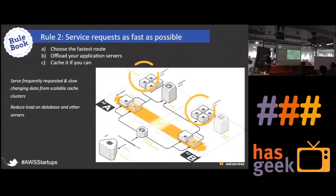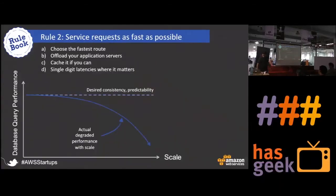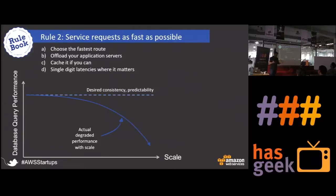Next is caching — an undervalued concept. Caching can happen at every layer. CDN is caching at the web layer. Then there is caching between the app and the database layer using Memcache, Redis, and similar tools. We advise customers to leverage that. Also, single-digit latencies where it matters — in the context of databases. When databases scale, it becomes very important not to put everything onto MySQL or a relational database. Think about newer options like MongoDB.